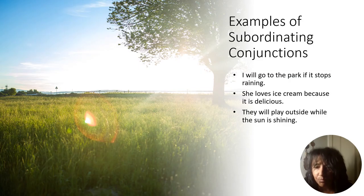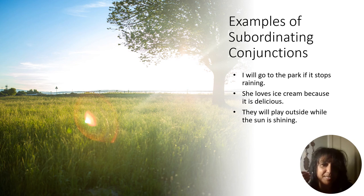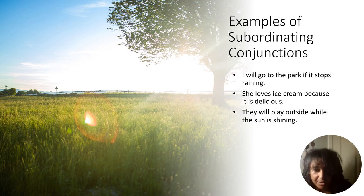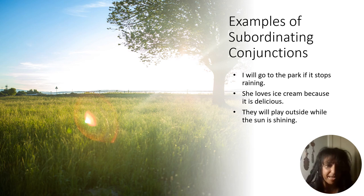Here's an example of subordinating conjunctions: 'I will go to the park if it stops raining.' Here's another: 'She loves ice cream because it is delicious.' And: 'They will play outside while the sun is shining.' In those sentences, am I using a coordinating conjunction or a subordinating conjunction? Let's explore a little more and then we'll come back to this.